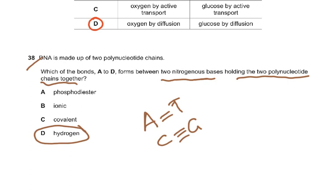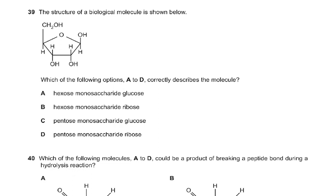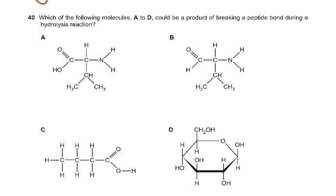Question number 39: the structure of a biological molecule is shown. Which of A to D correctly describes this molecule? First decide: is it a pentose or a hexose? It is definitely a pentose monosaccharide — glucose is a hexose, not a pentose. Ribose is a pentose, so the answer is D. Hexoses include glucose and fructose; pentoses include ribose and deoxyribose — five-carbon sugars. Question 40 asks which of A to D could be a product of breaking a peptide bond during a hydrolysis reaction, so which one looks like an amino acid?